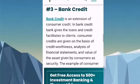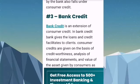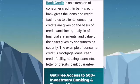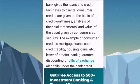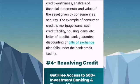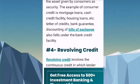Number three is bank credit. Bank credit is an extension of consumer credit in which the bank gives loans and credit facilities to clients. These are given on the basis of credit worthiness, analysis of financial statements, and the value of assets and security provided by the consumer. Examples include mortgage loans, cash credit facilities, housing loans, letters of credit, bank guarantees, and discounting of bills of exchange.